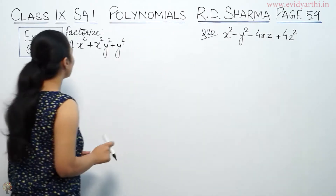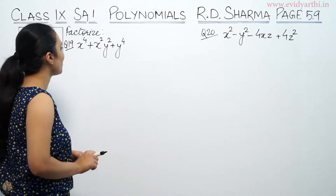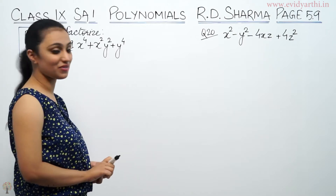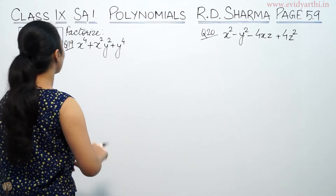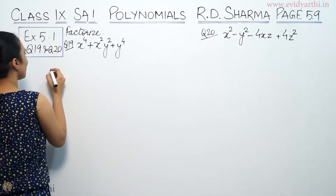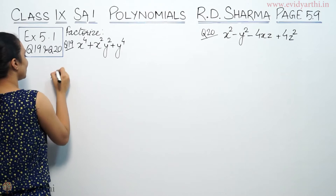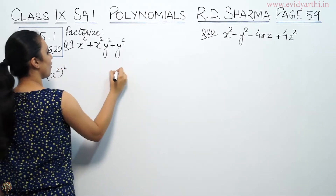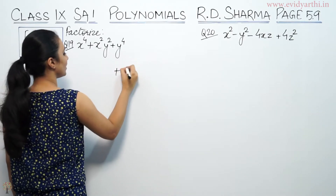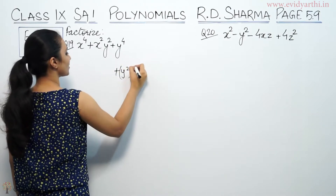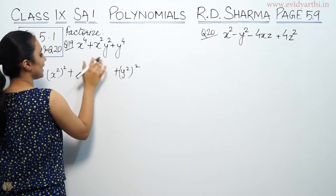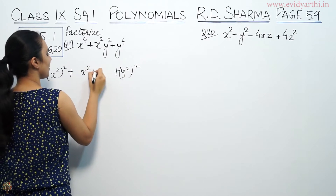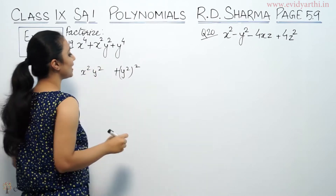It says factorize x⁴ plus x²y² plus y⁴. We can write x⁴ as x² times x², and y⁴ as y² times y².